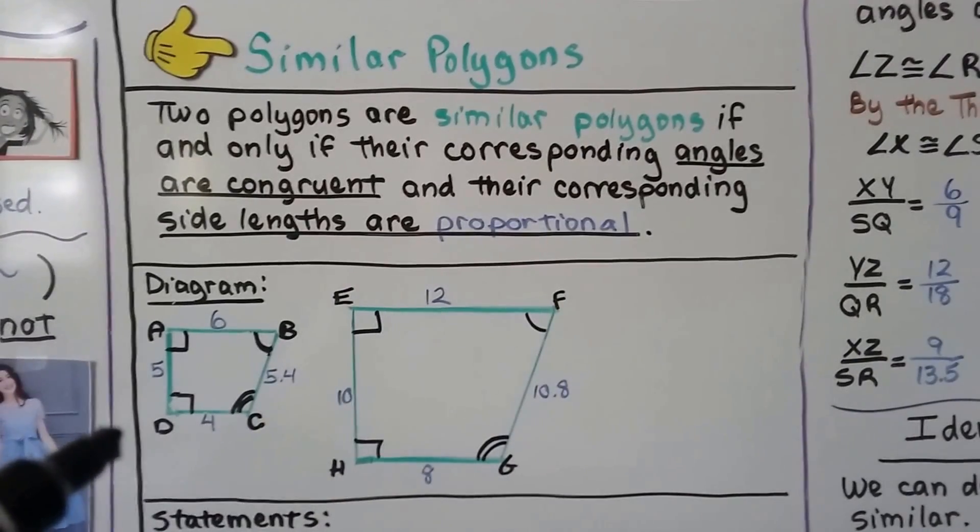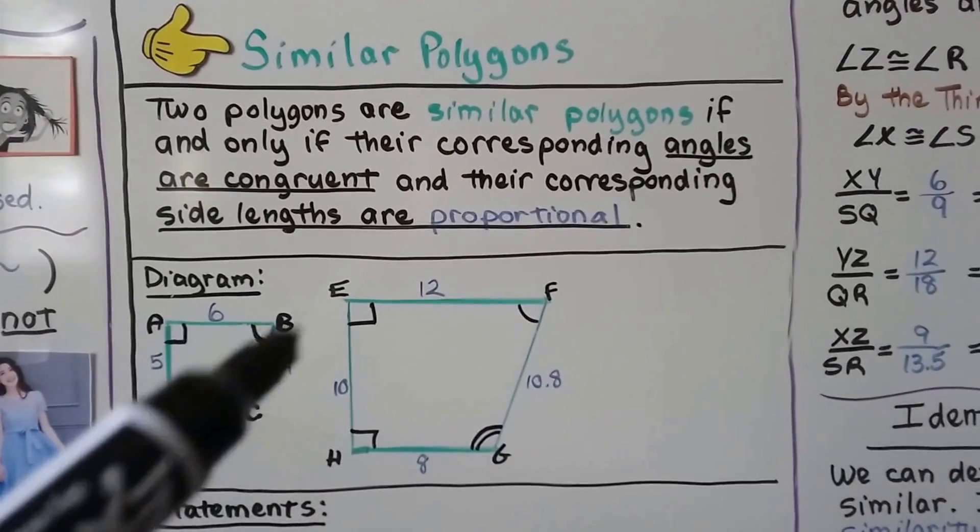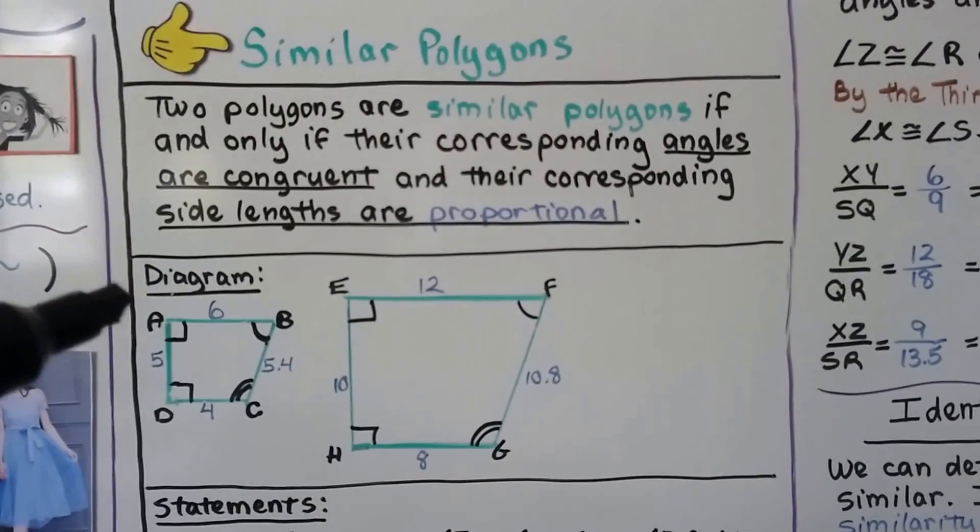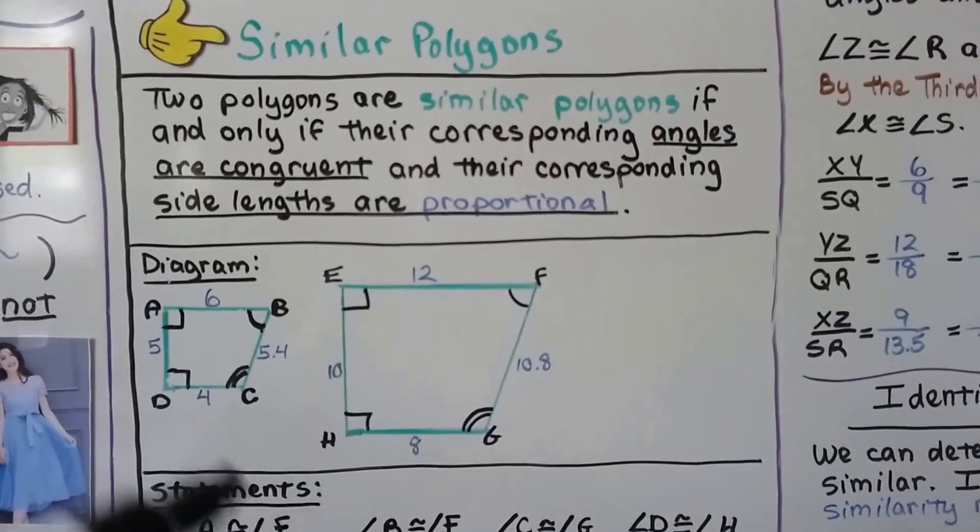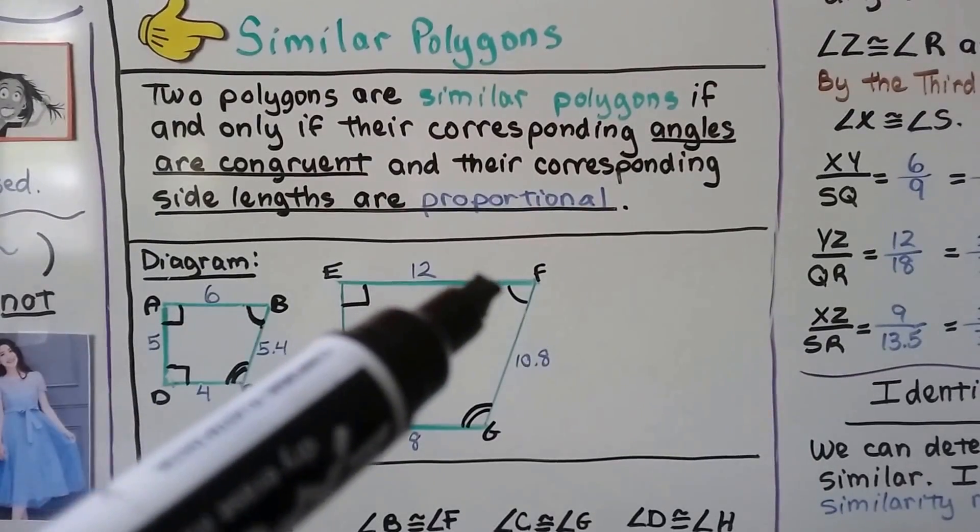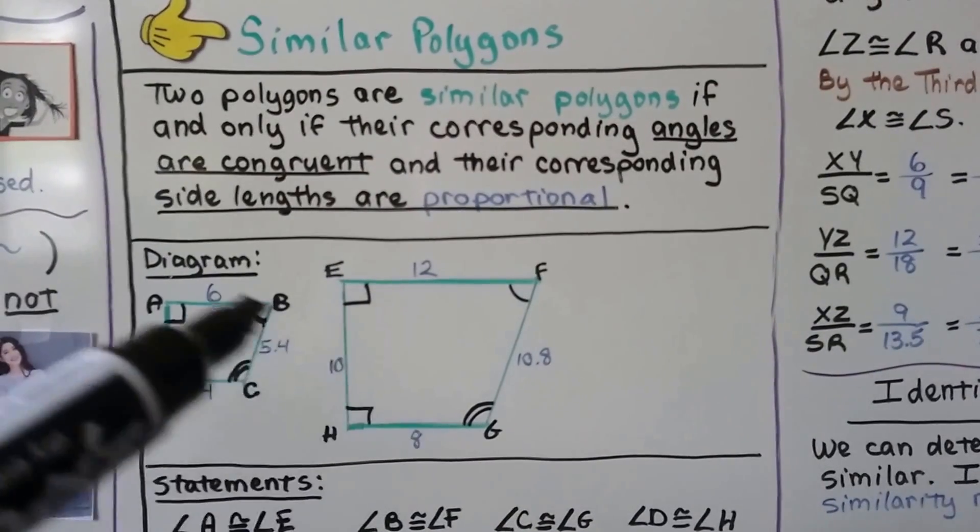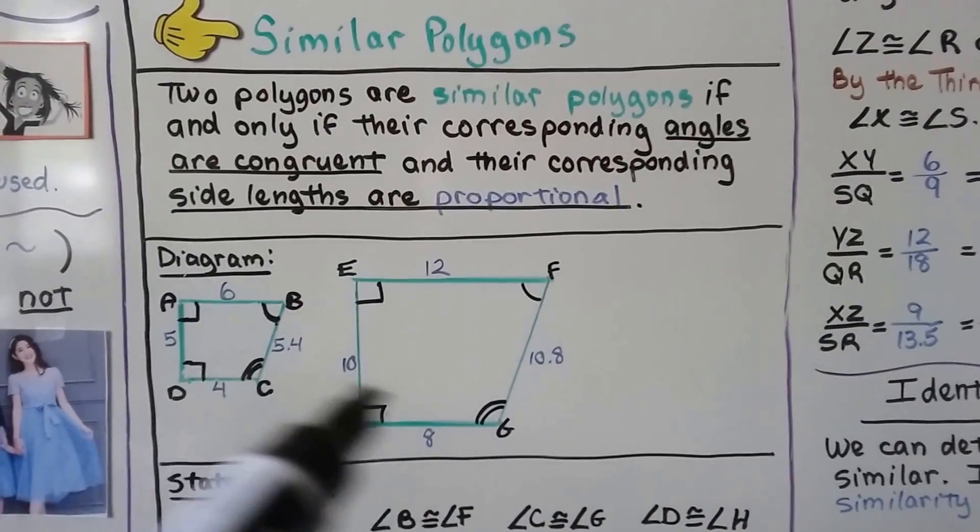Take a look at this diagram. We have A, B, C, D and E, F, G, H. We can see that that's a right angle, that's a right angle, just like here. And we can see that B is congruent to F, and C is congruent to G.